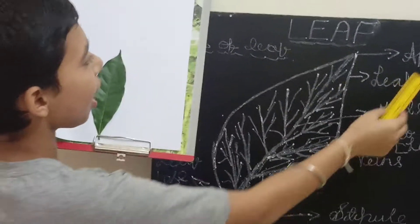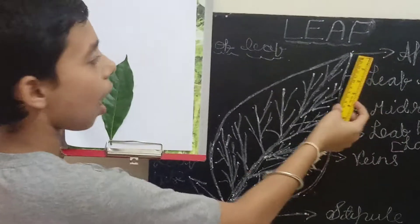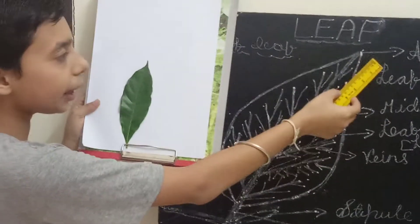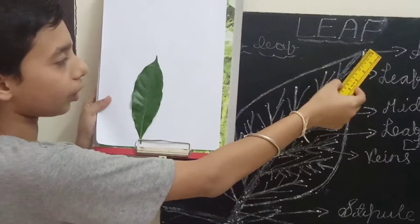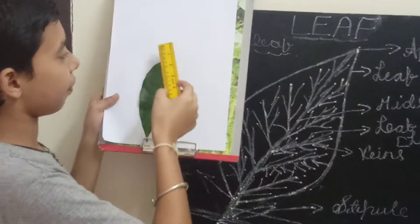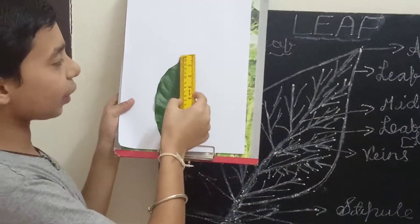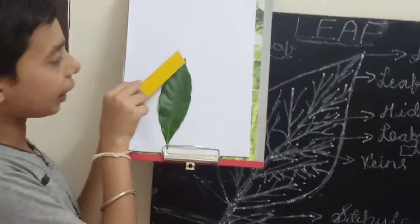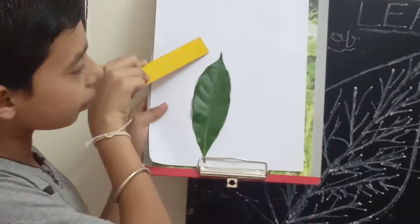This is only the leaf apex. Apex is the tip point of the leaf. See, this is only the apex — this one.